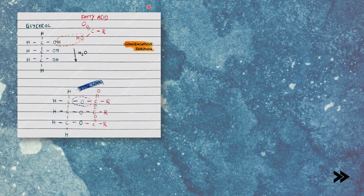Here I've drawn a diagram to illustrate this. We have glycerol, which has the alcohol functional group, which reacts with one fatty acid. This is a condensation reaction, so the OH group from the carboxylic acid group of the fatty acid is lost, and the hydrogen atom of the alcohol group of the glycerol. This forms an ester link between the fatty acid and the glycerol to form a triglyceride. So triglycerides are esters.